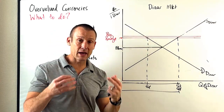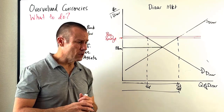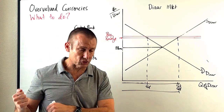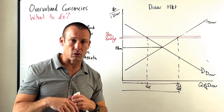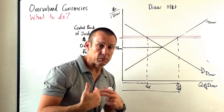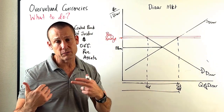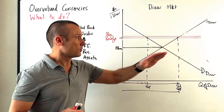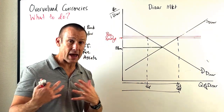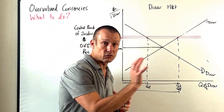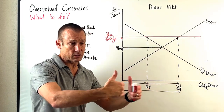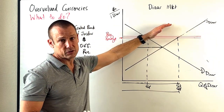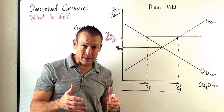Finally, they can put capital controls in place. A capital control means we're not going to allow capital flight — we're not going to allow a lot of investors to pull their money out of Jordan. Even our own citizens: we're only going to let them invest so much abroad, say 10,000 USD. That limits financial capital outflows and reduces the supply of dinar.